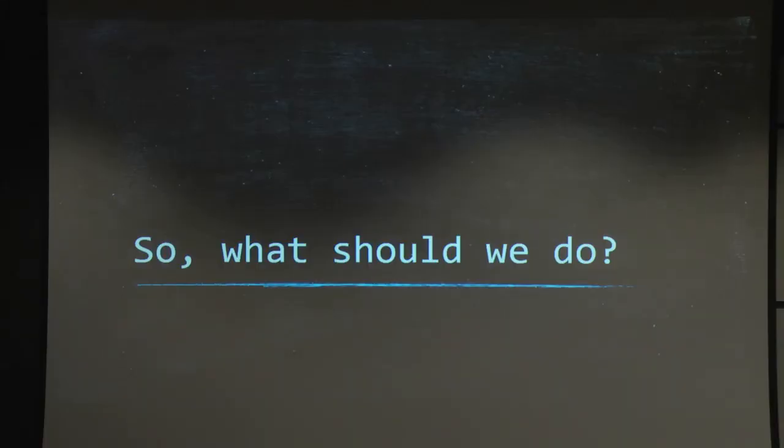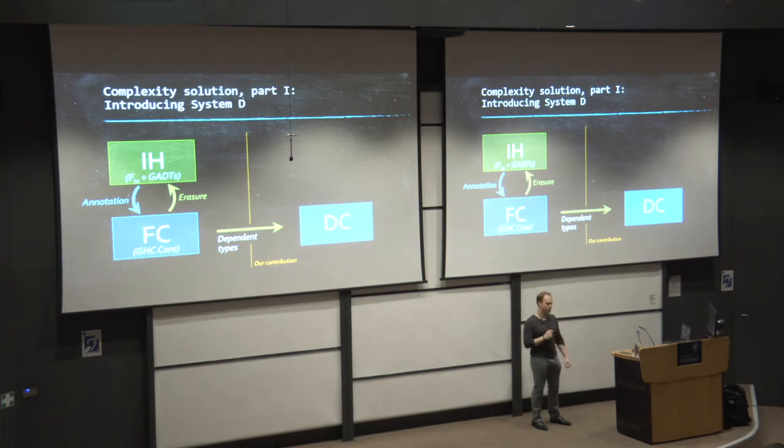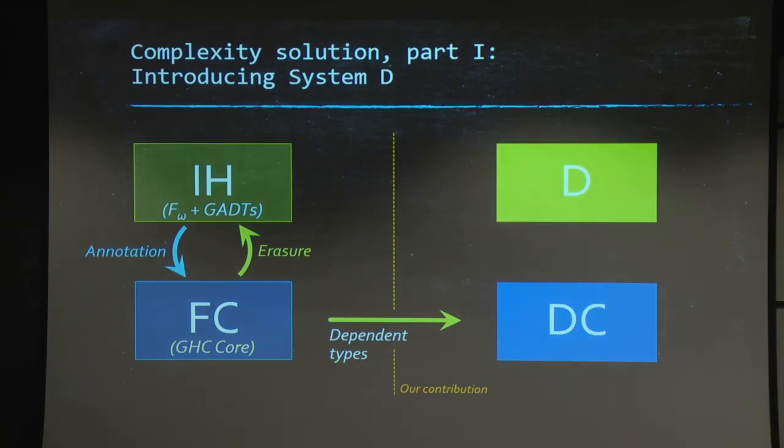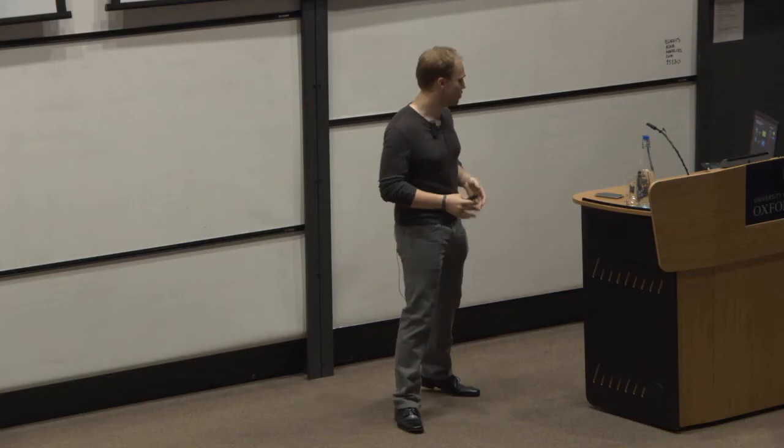So what do we do about that? Well, we're going to introduce a language that you do want to work with. Here is system D. So as before, you can think of system D as IH with dependent types. The big difference, though, is that IH wasn't really part of previous FC work. But D is a prominent feature, is a prominent contribution of our work.